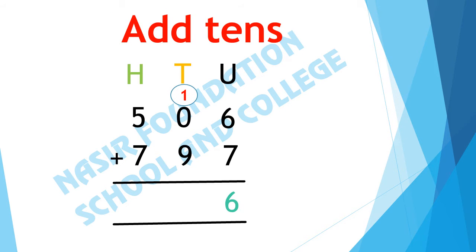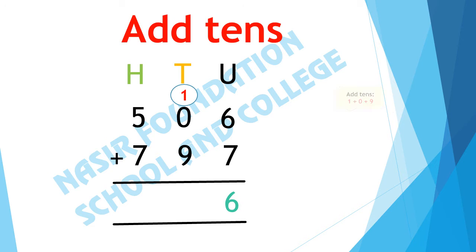After the addition of units we will move towards tens. We will add the digits that are in the tens column. In tens column there is 1, 0 and 9. We will add them. In 1 we will add 0. 0 means nothing. Now we will add 9 in it.